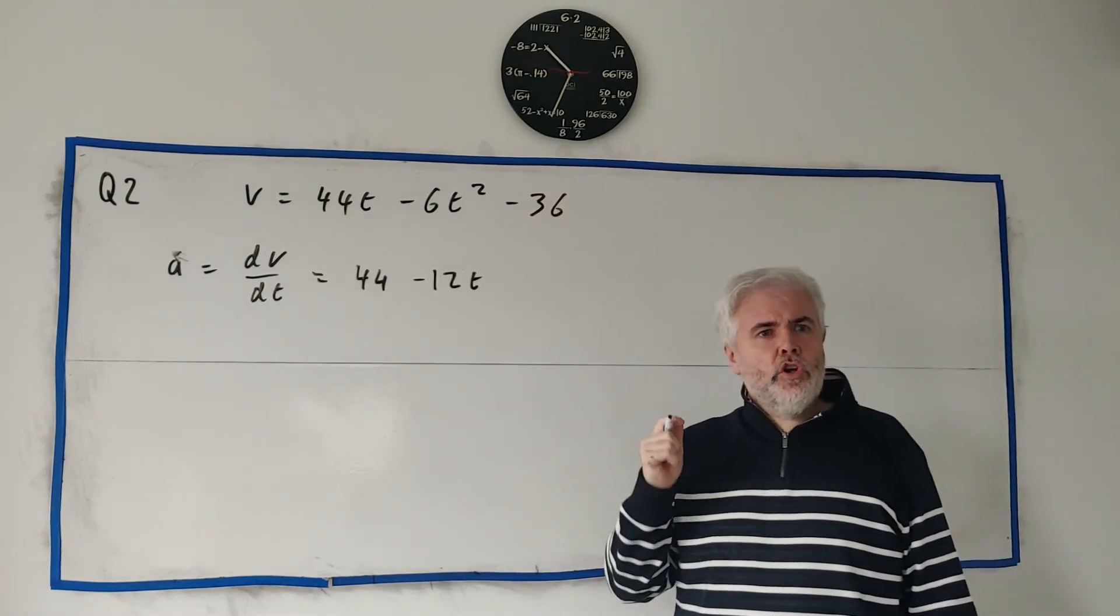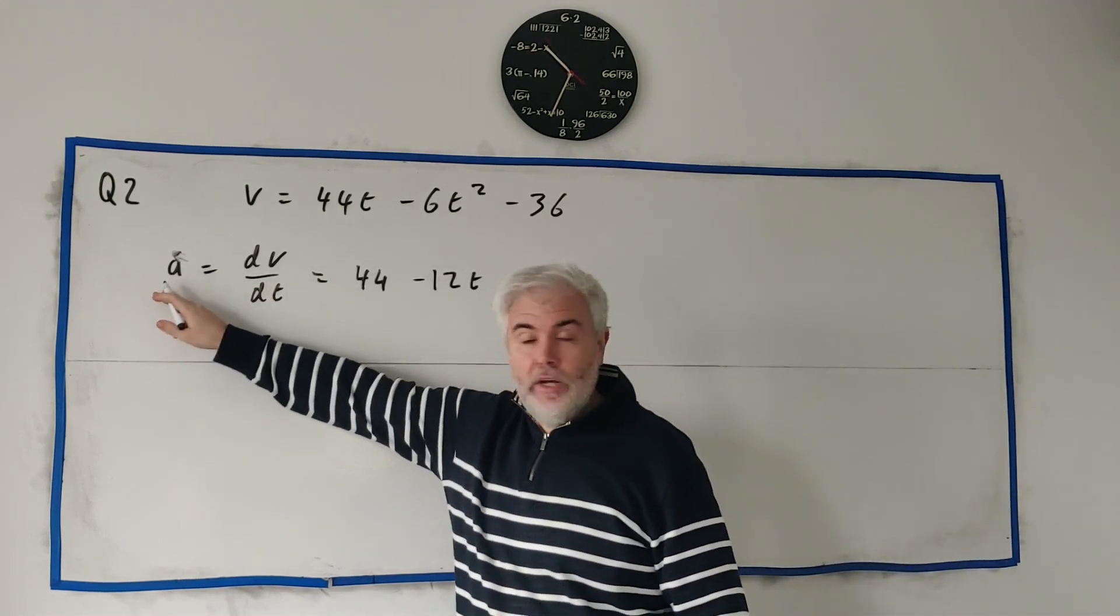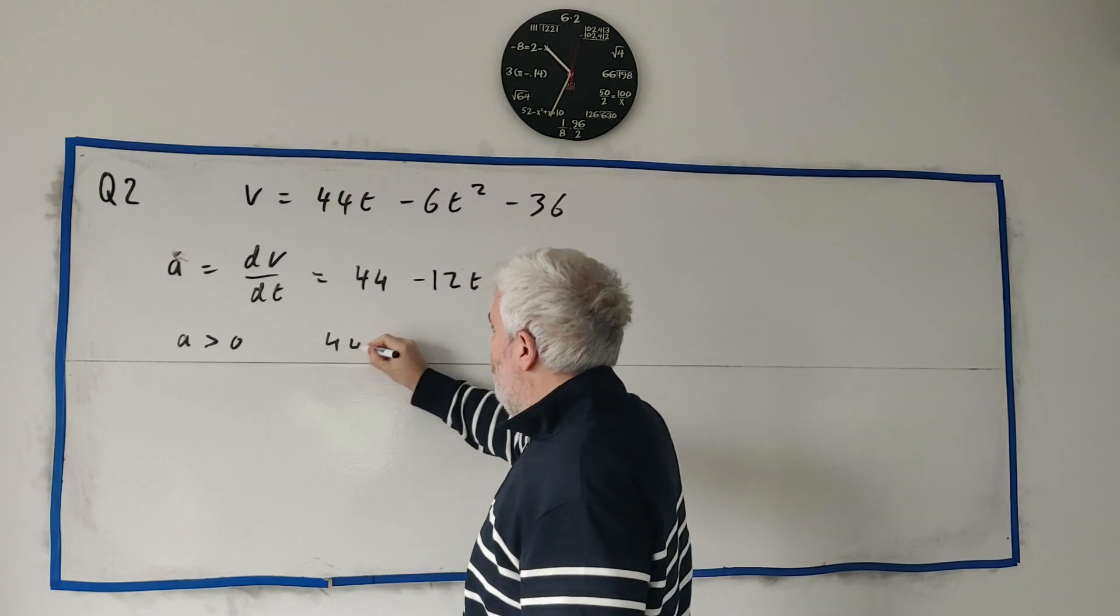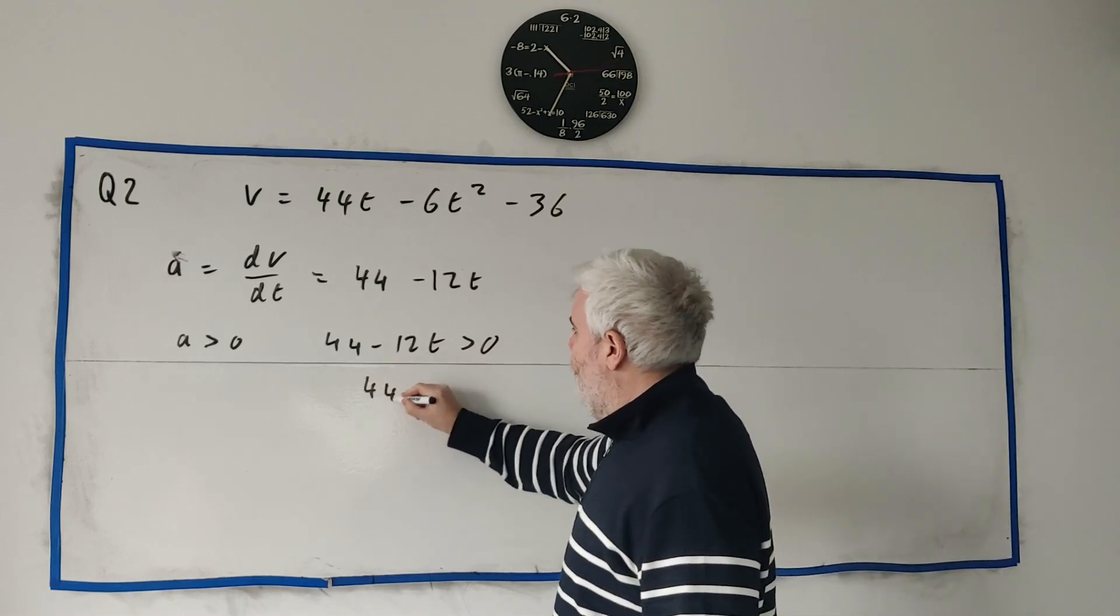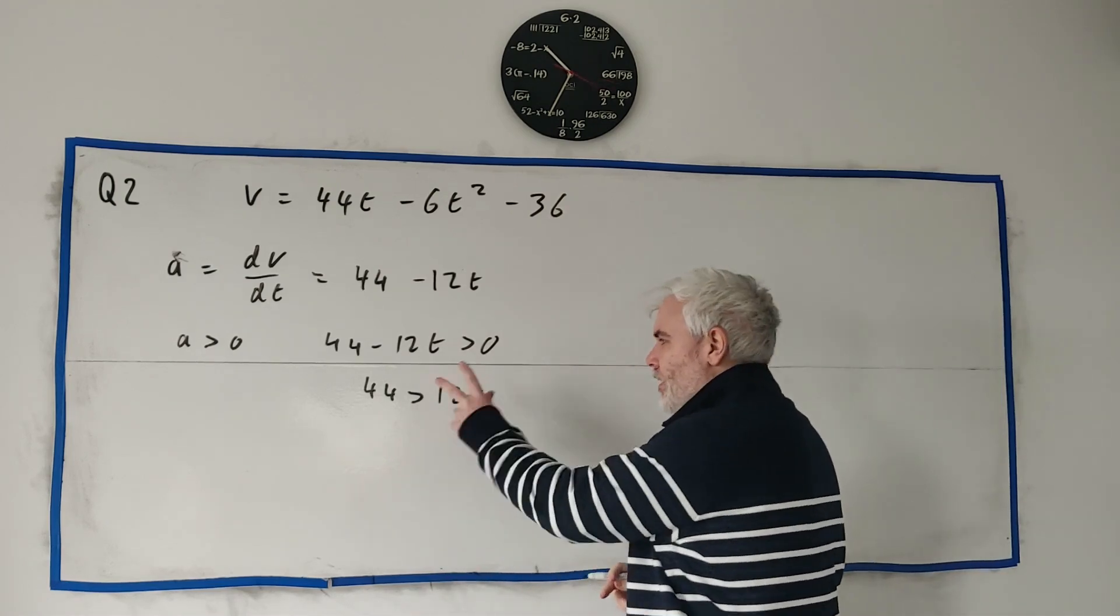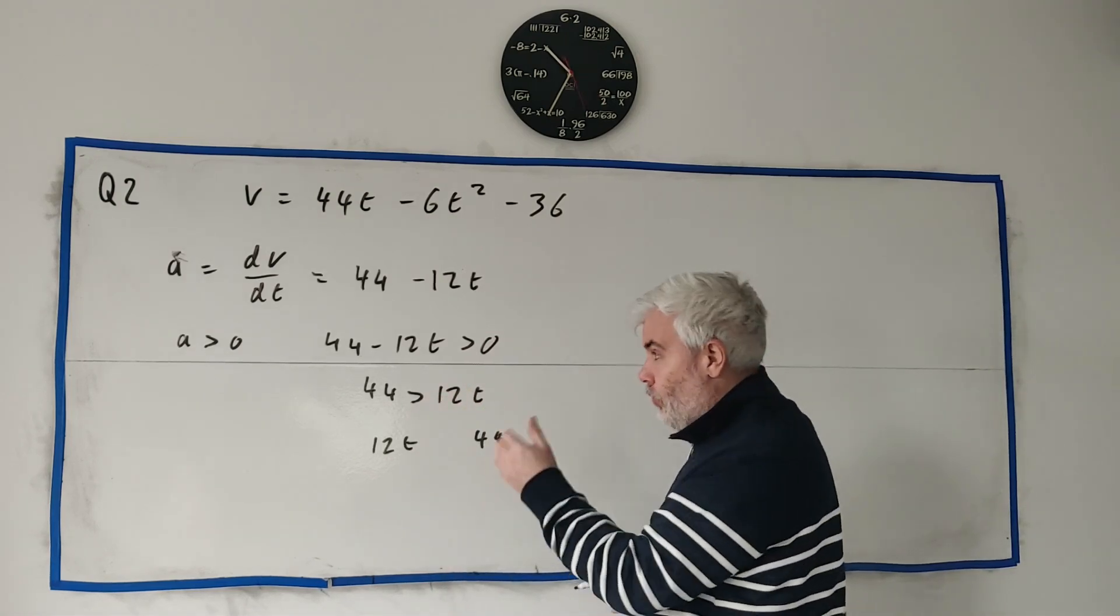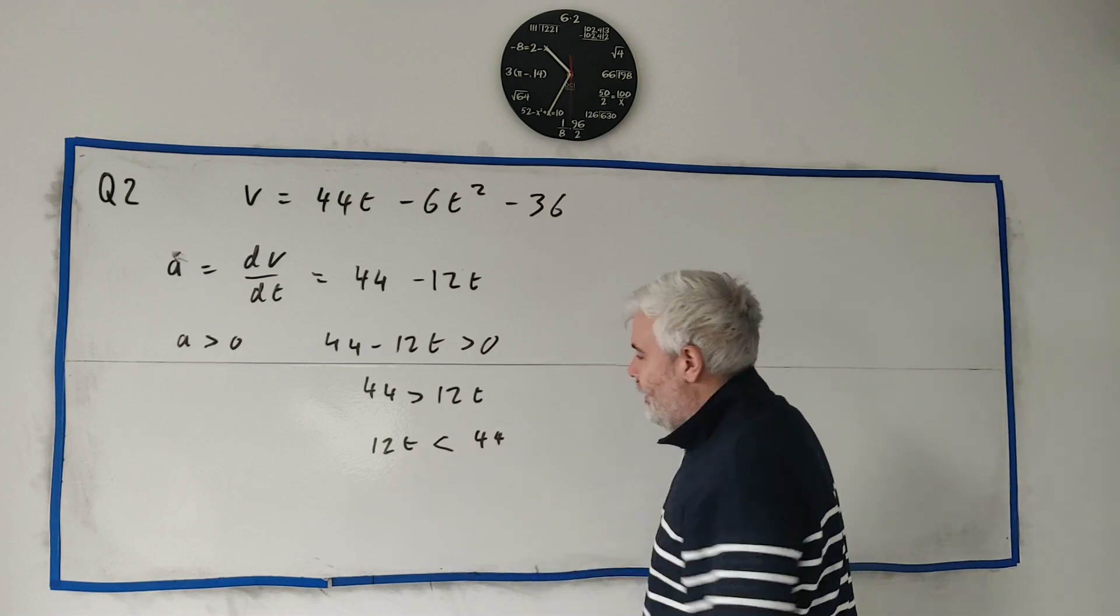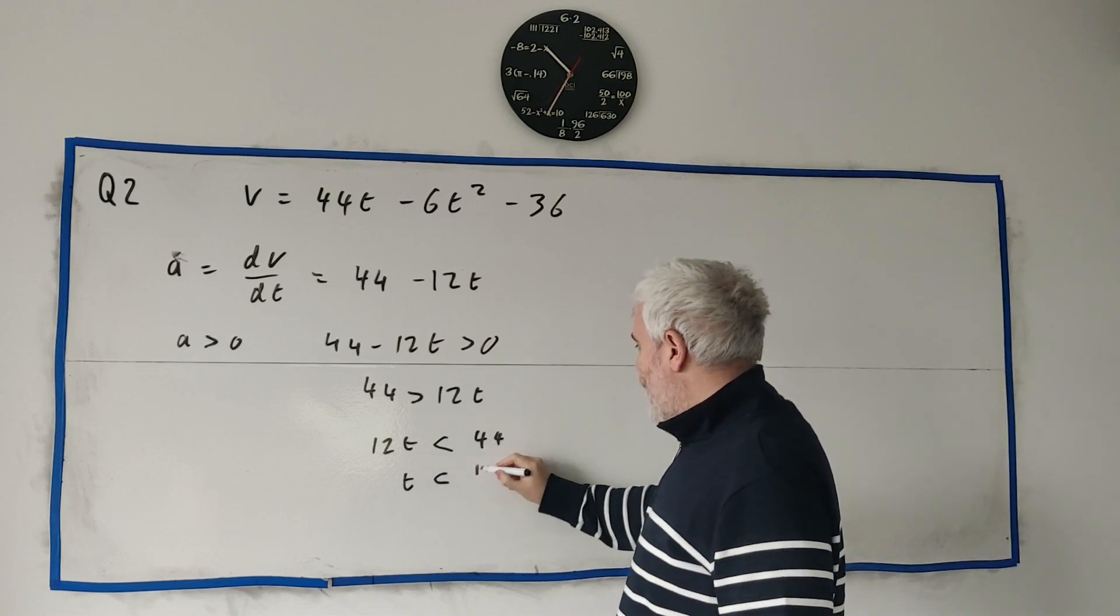That's acceleration. So what they've asked us is more of a maths question. Find a set of values for which a is positive. So for a is bigger than 0. Or instead of a, we can put in 44 minus 12t is bigger than 0. So we just start rearranging here. We get 44 is bigger than 12t. I like to keep the variable on the left, so let's switch sides. We get 12t less than 44. Be careful though, you have to switch the greater than or less than. It has to still make sense. Divide both sides by 12. We get 11 over 3.